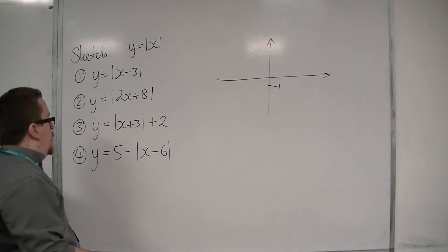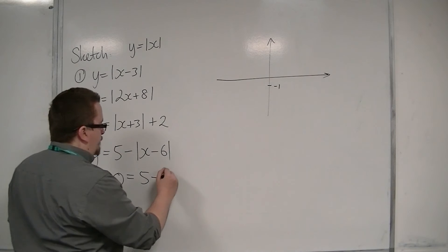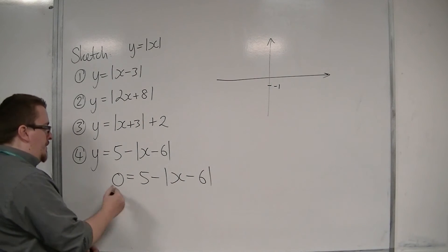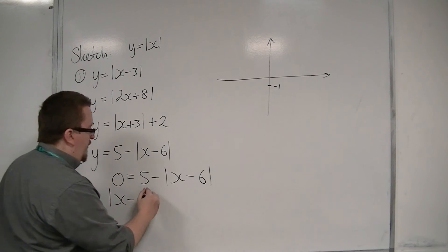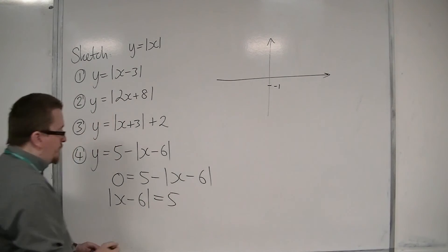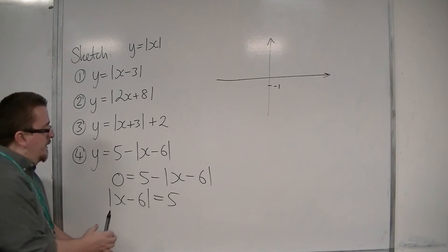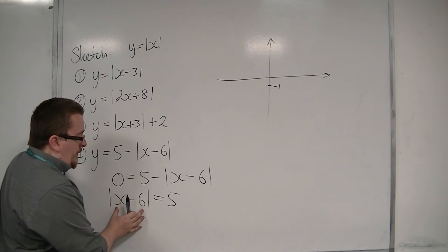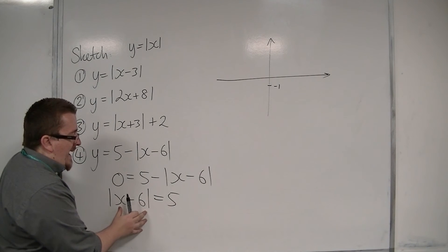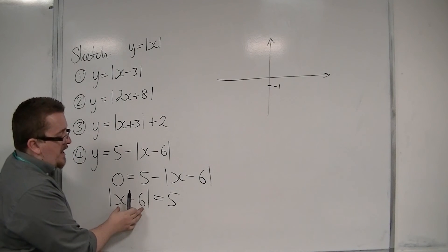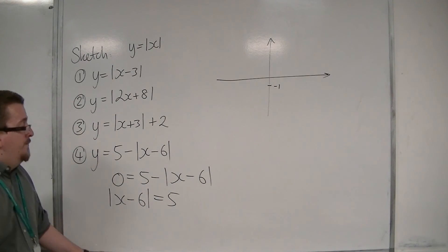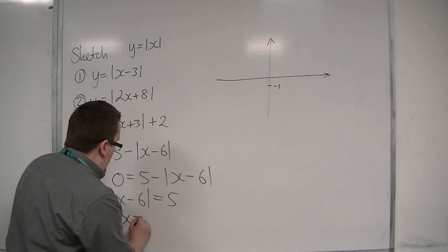Now when y is zero, we get this equation. So we add the modulus of x minus six to both sides. What we're looking for here are ways of getting the modulus of x minus six to be five. So for example, x could be 11, because 11 take away six is five.